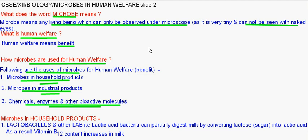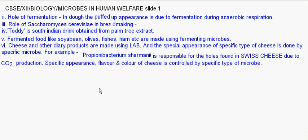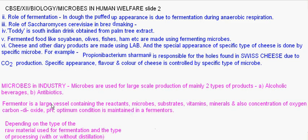Microbes in human welfare, slide 2 or part 2. In the first part I explained what the word microbe means, what is human welfare, and how microbes are used for human welfare. The main types are microbes in household products, microbes in industrial products, chemicals, enzymes and other bioactive molecules are also synthesized using microbes. In the first slide I explained microbes in household products in detail, as well as microbes in industry — the first part being alcoholic beverages.